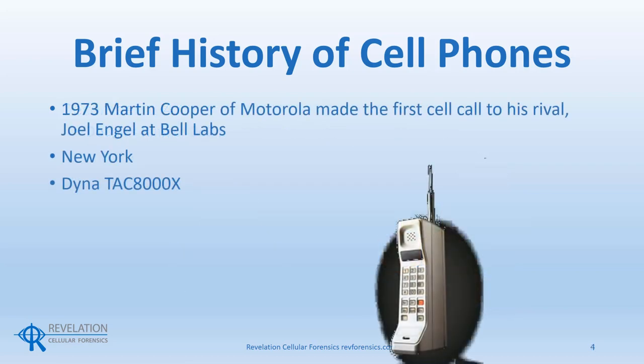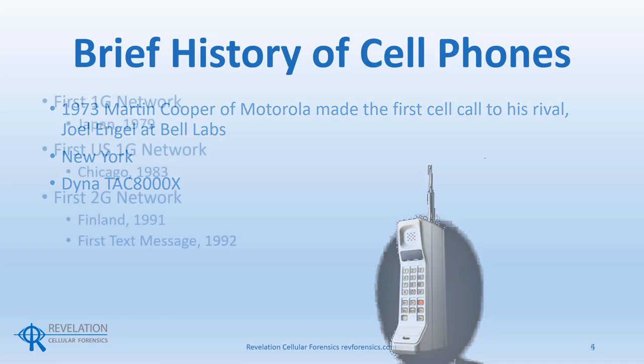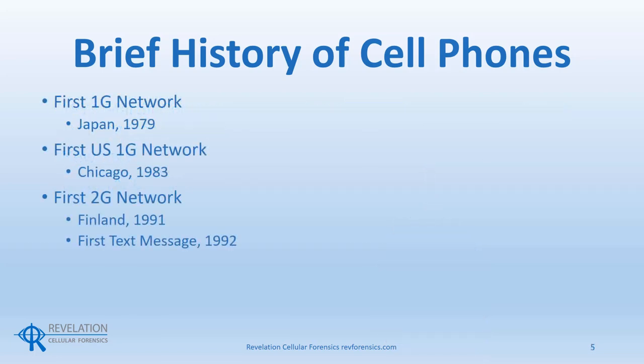Later, Bell Labs and Motorola competed to produce the first cellular network. In 1973, Martin Cooper of Motorola made the first cellular call to his rival Joel Engel at Bell Labs. This call took place in New York using a Motorola Dynatac 8000X. From there, the cellular networks grew and evolved.